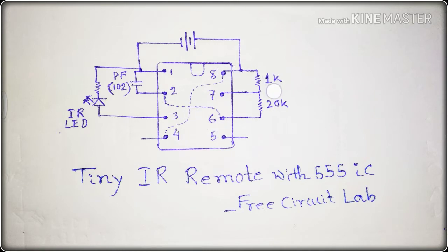And between pin 8 and pin 7, there is 1K resistor. And between pin 7 and pin 6, there is 20K resistor. And here is a capacitor which code is 102. That means 0.001 microfarad is connected between pin 1 and pin 2.